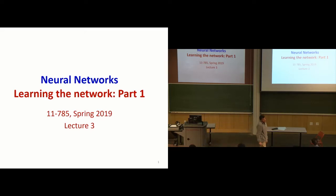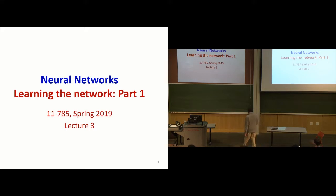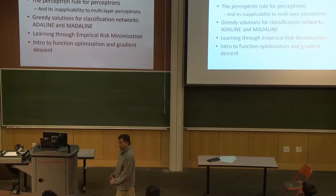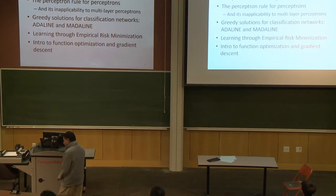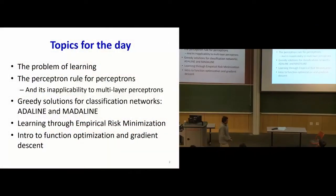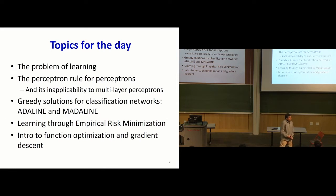So let's just jump straight in. What we've seen so far is that neural networks can approximate pretty much any function. We've seen that in the past couple of lectures, and you've also seen that in your quiz. But then, they can approximate any function — how do you make them approximate a specific function of your choice? That's what we're going to deal with today. This is the problem of learning.